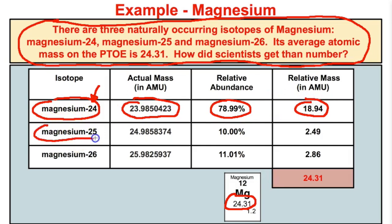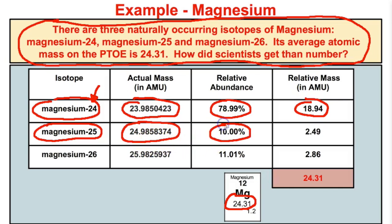Same thing with magnesium-25. If we take the actual mass of this isotope, it's going to be 24.9858374. And if we multiply that by its relative abundance in the universe, we will end up with 2.49.